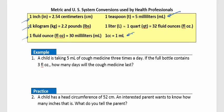Example 1: A child is taking 5 milliliters of cough medicine three times a day. If the full bottle contains 3 fluid ounces, how many days will the cough medicine last? First, we need to convert 3 fluid ounces into milliliters. We write 3 fluid ounces as a fraction over one and begin converting.